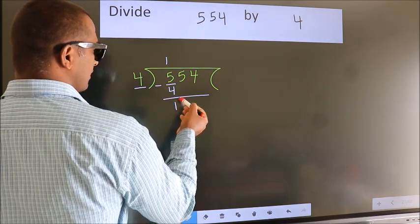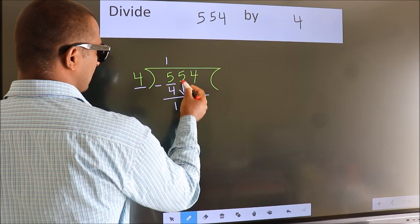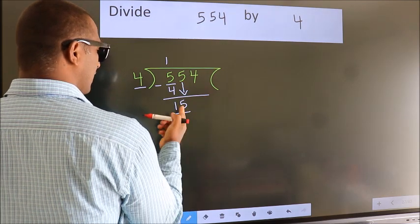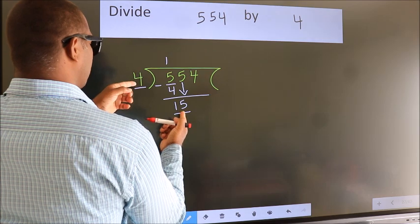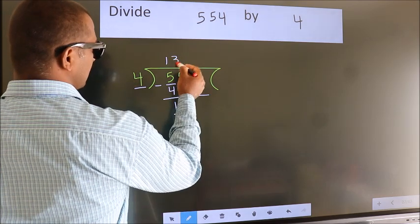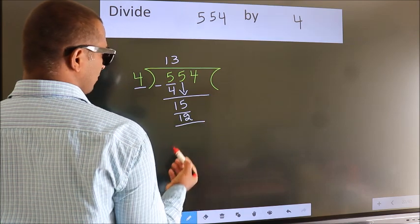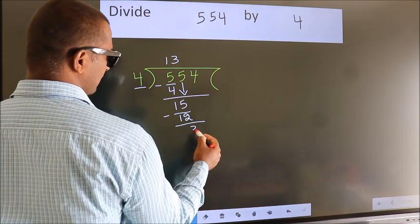After this, bring down the beside number. So 5 down. So 15. A number close to 15 in the 4 table is 4 threes, 12. Now we subtract. We get 3.